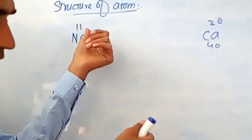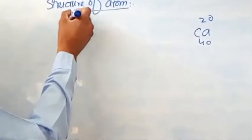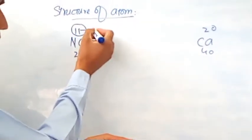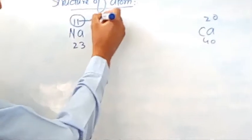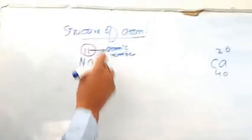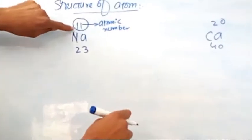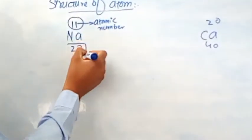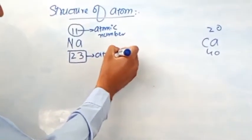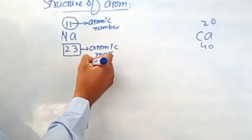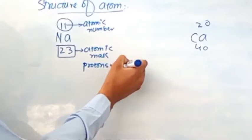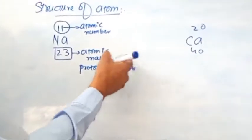For example, this is a sodium atom. The number above, which is 11, is the atomic number of sodium. Atomic number is the number of protons. So sodium has 11 protons in the nucleus. The number below, which is 23, is known as atomic mass, and atomic mass is the number of protons plus neutrons in the atom nucleus.